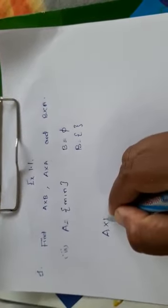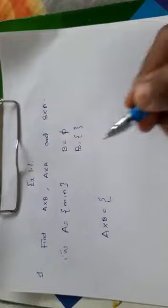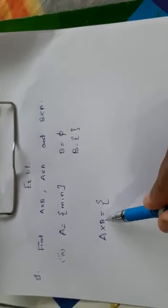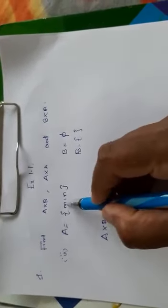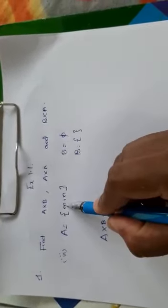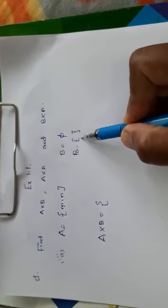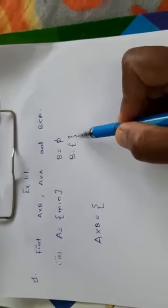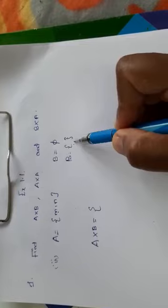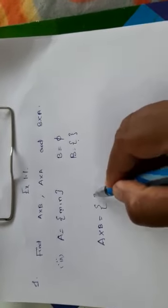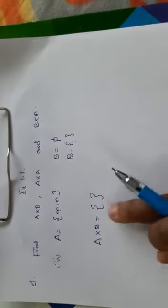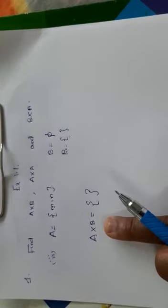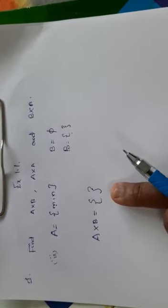You have been asked to find out what is A cross B. A cross B: you have to take the first element and form ordered pairs with B elements. Since you don't have any element in the B set, you will not be able to find any ordered pair. So A cross B is nothing but null set.